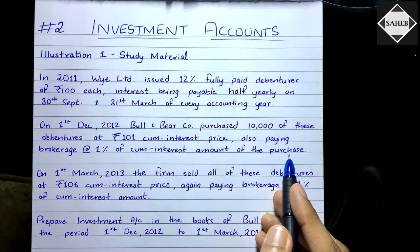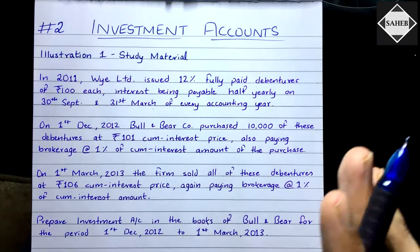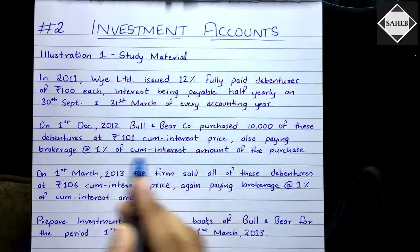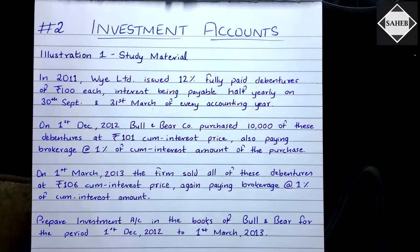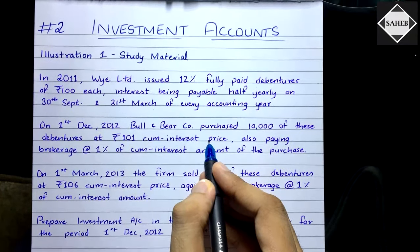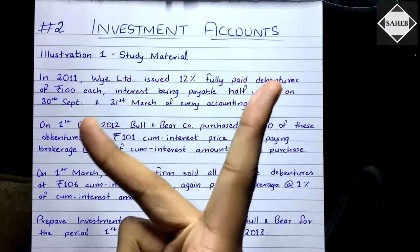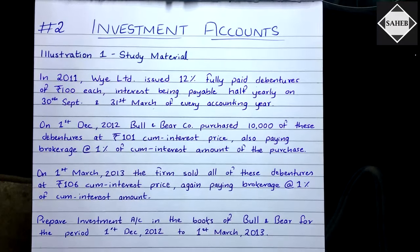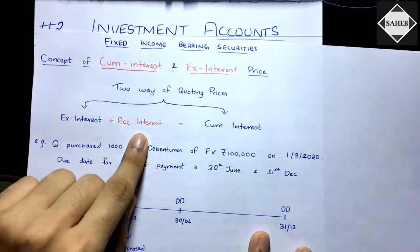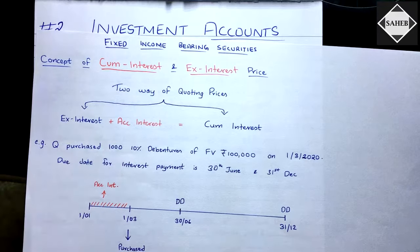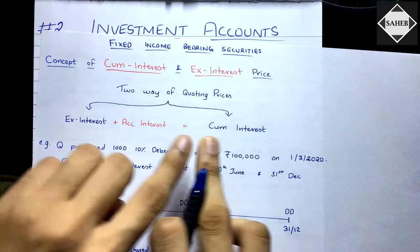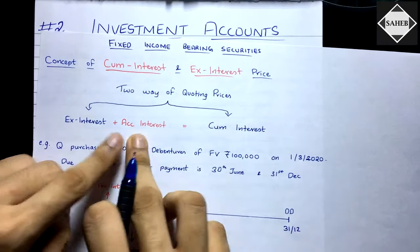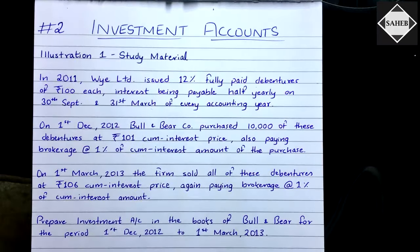On 1st December 2012, Bull and Bear Company purchased 10,000 of these debentures at ₹101 cum-interest price, also paying brokerage at 1% of the cum-interest amount. The question tells you exactly how to calculate brokerage — 1% of cum-interest. Since cum-interest price is given, you deduct the accrued interest to get the ex-interest price.